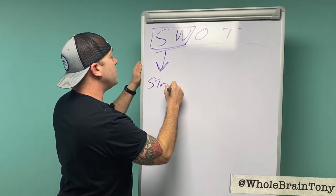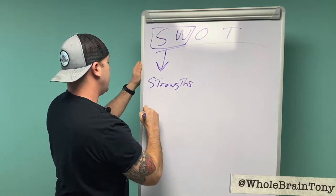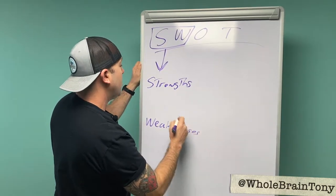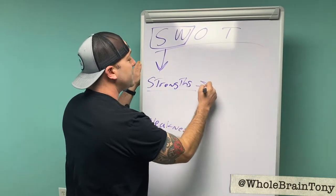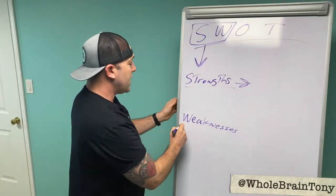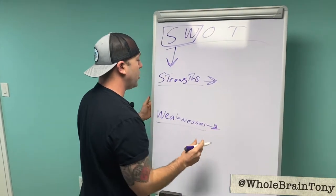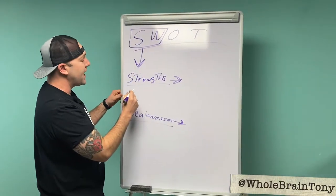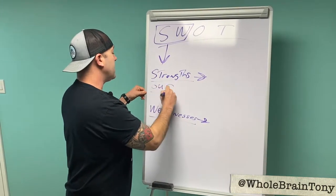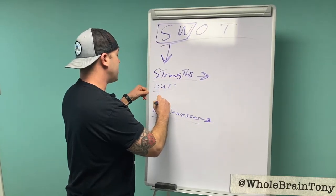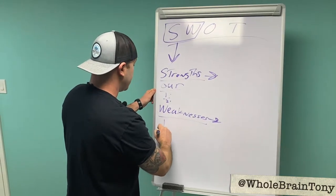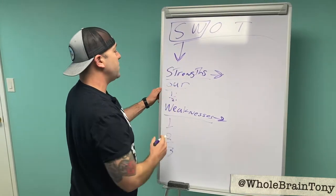As I'm looking at a specific deal that I'm trying to win, I want to look at two key areas: strengths and weaknesses. Specifically when I'm looking at an account — particularly if you're in a competitive environment, possibly a larger deal — I'm going to list out what are our strengths and what are our weaknesses in this account.